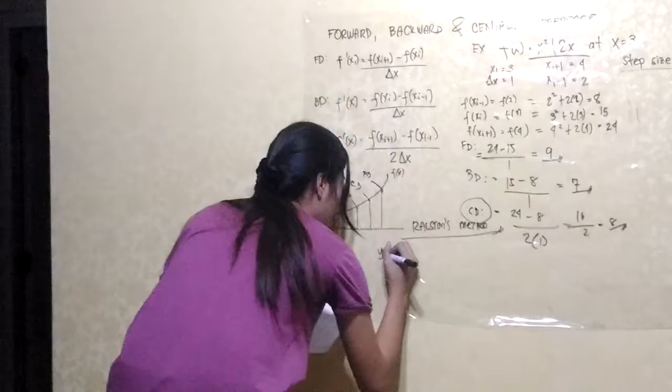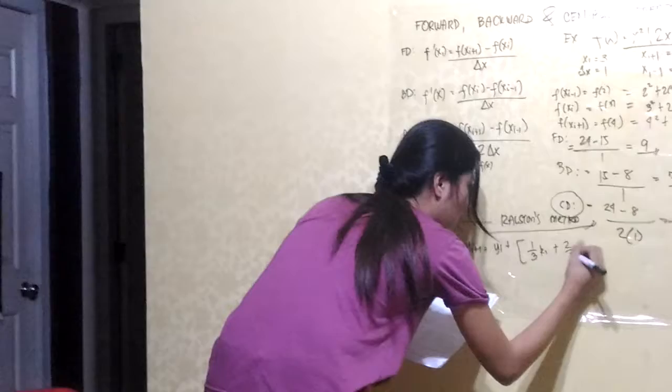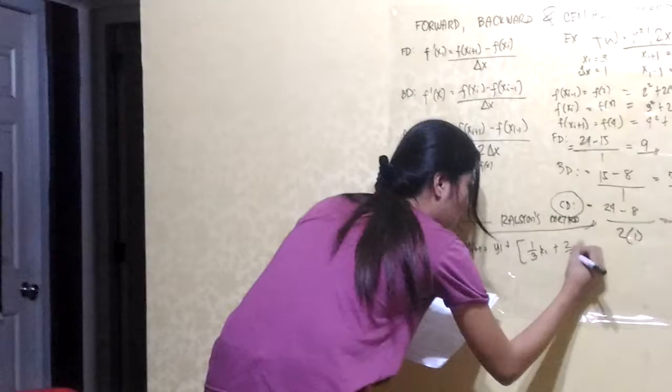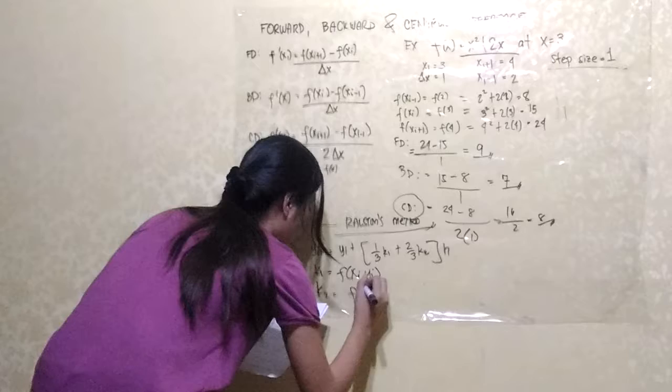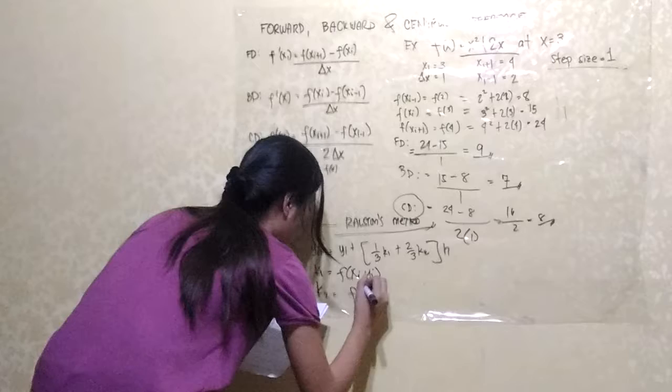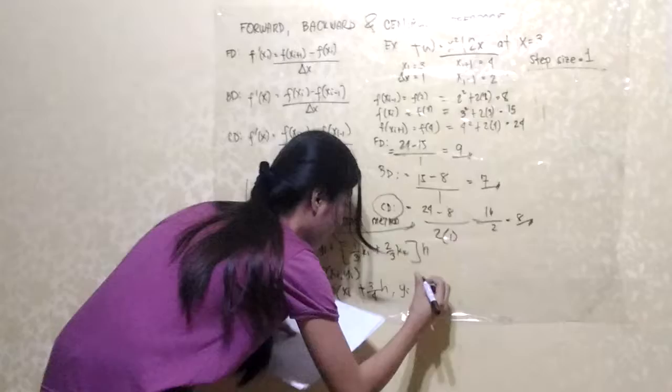For Ralston's method, y sub i plus 1 is equal to y sub i plus one-third k1 plus two-thirds k2, multiplied by our h. For finding k1, that would be the function of x sub i and y sub i. For finding k2, that would be the function of x sub i plus three-fourths of h, and y sub i plus three-fourths of k1 times h.